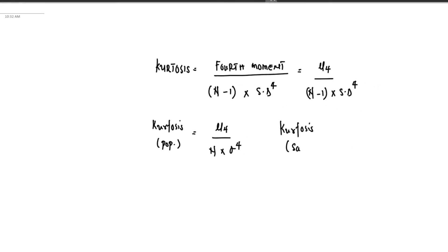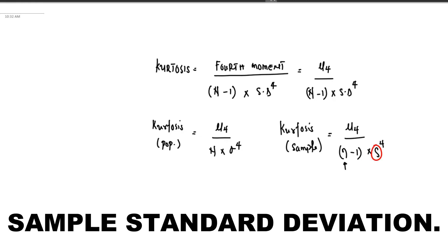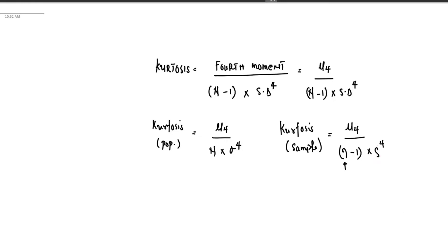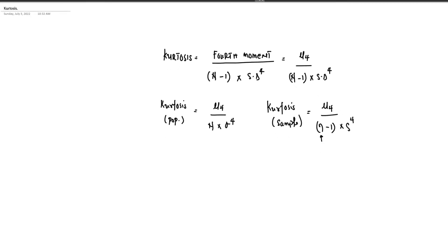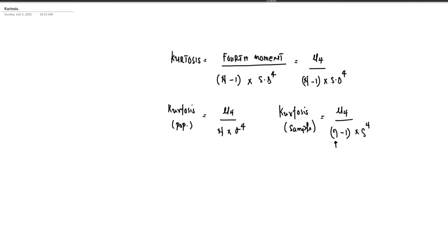For a sample, the kurtosis formula uses mu4 — representing the fourth moment of the mean — divided by n minus one, where n is the size of the data set, times the sample standard deviation s raised to the power of four. These are the basic variations of the kurtosis formula depending on whether we have population data or sample data.